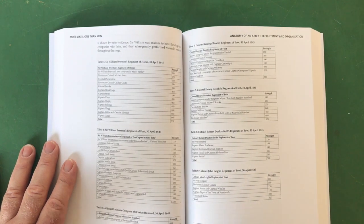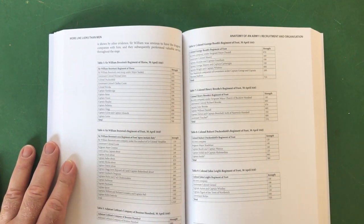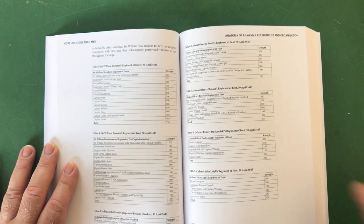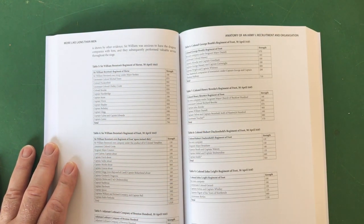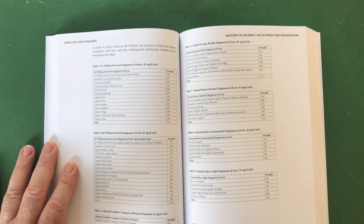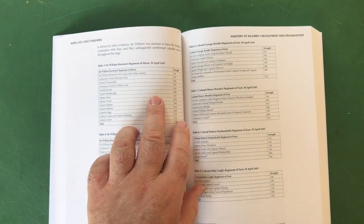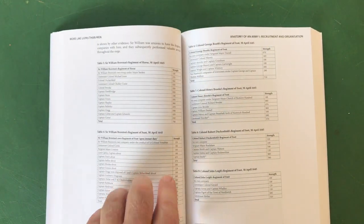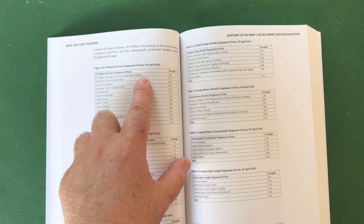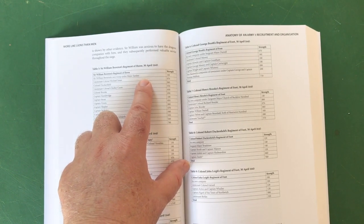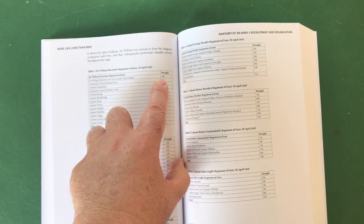Talking of more detail, this is where it gets really into the nitty-gritty. Table 3: Sir William Brereton's Regiment of Horse, 13th-30th of April 1645.